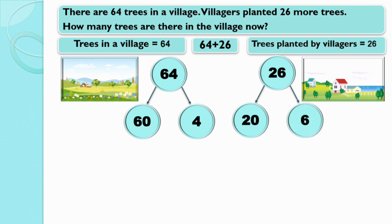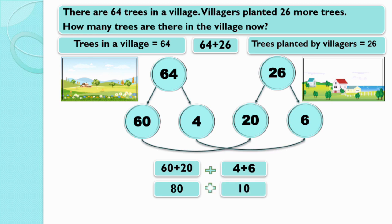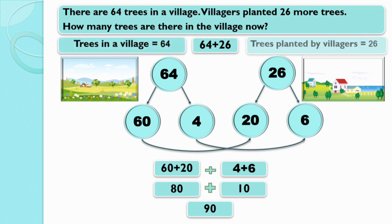Let's add these numbers. Firstly, add 60 and 20, then add 4 and 6, and then we will add them further. 60 plus 20 is equal to 80. 4 plus 6 is equal to 10. 80 plus 10 is equal to 90. So trees in a village is 64, villagers planted 26 more trees, and now there are 90 trees in the village.